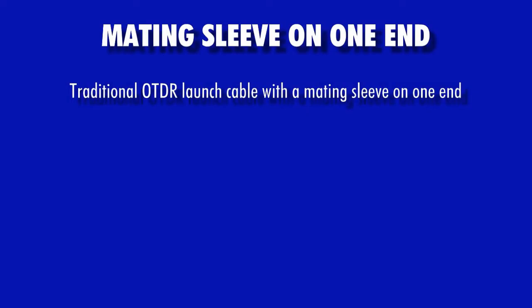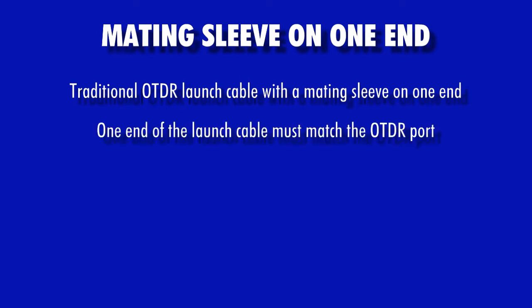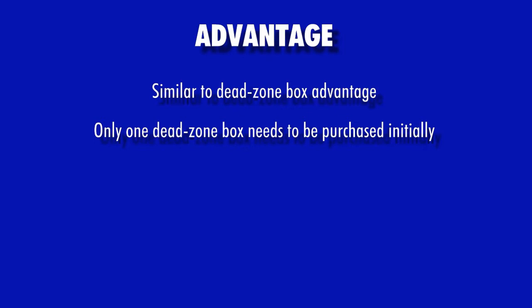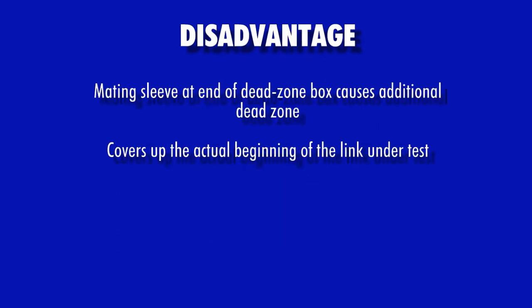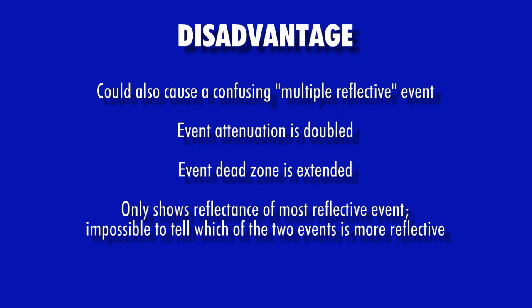Finally, a hybrid male-to-female configuration places a mating sleeve on only one end of a traditional OTDR launch cable, assuming that the male end matches the connector type of the OTDR port. This configuration is accomplished by placing a mating sleeve onto the end of an OWL fiber ring product. The advantage is similar to the dead zone box — a short patch cable makes the final connection to the link under test if the near end patch panel connector differs from the launch cable end. The disadvantage is that the mating sleeve at the end of the launch cable produces a reflective event that combines with the reflective event at the beginning of the link under test, preventing the technician from separately measuring the loss or reflectance of the beginning of the link. These two events produce a multiple reflective scenario where the event attenuation is roughly double what it should be, the dead zone at the beginning of the link is extended, and since the two reflections cannot be isolated, it is impossible to tell which event is more reflective.